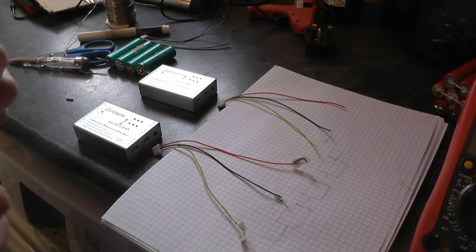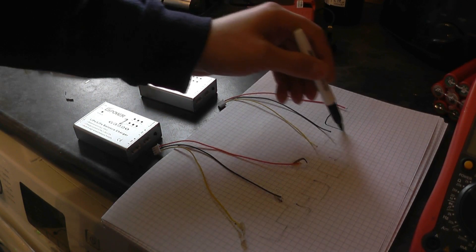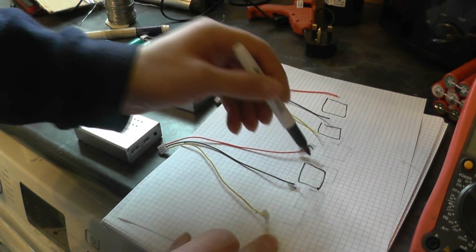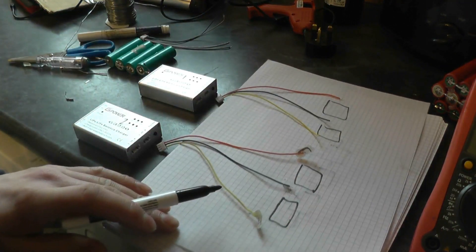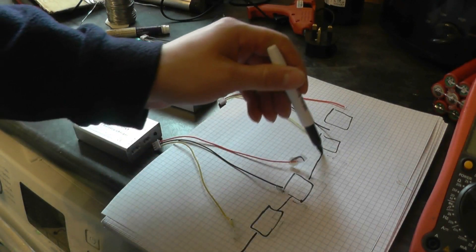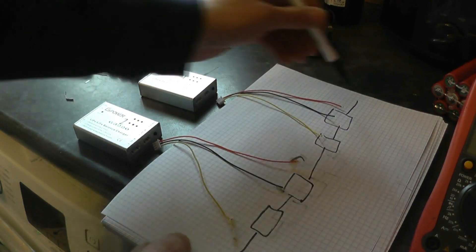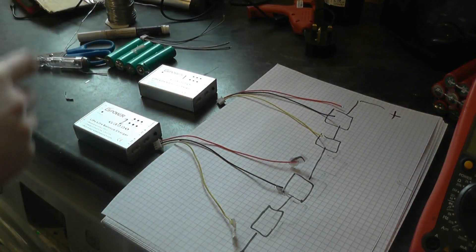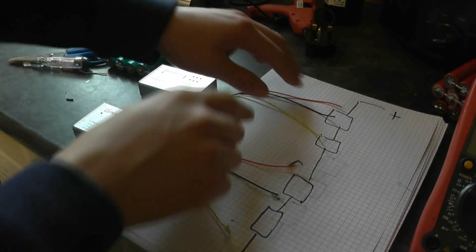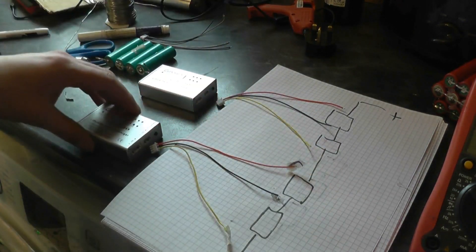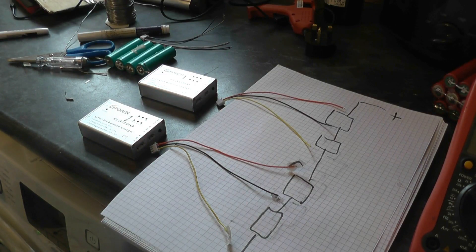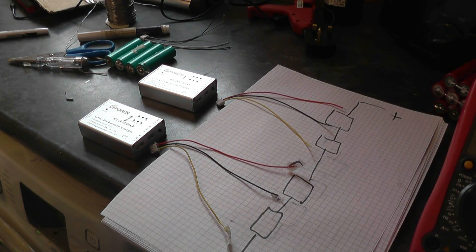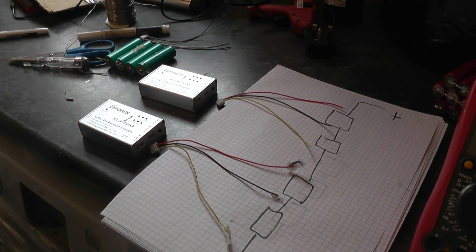So if we have these lined up like this, and we have 4 cells we want to charge, we're going to have 1, 2, 3, 4 cells. So we're going to need to join this up. Because this charges through balanced leads, as opposed to having balanced leads attached and then charging through the positive and negative end of the battery, we should be able to get away with utilizing these two together to charge 4 cells without causing any damage to the chargers or the cells, hopefully. We're going to try this the hard way anyway.